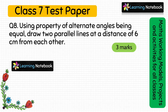Question number 8: using the property of alternate angles being equal, draw two parallel lines at a distance of 6 cm from each other. This question is from the chapter practical geometry and is of 3 marks. Using the property of alternate angles, we have to draw two parallel lines with a distance of 6 cm.